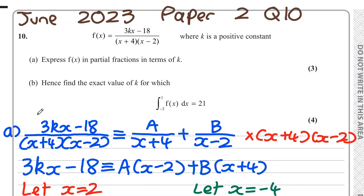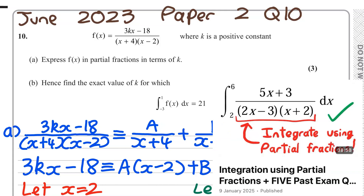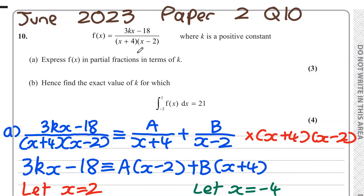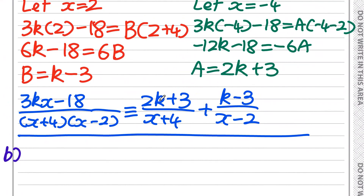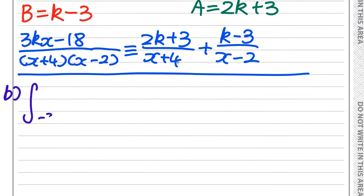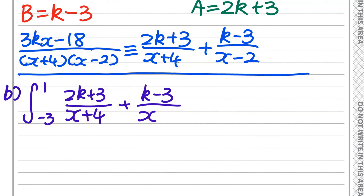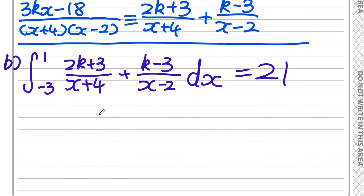For Part b, worth four marks, we need to find the exact value of k for which the integral between −3 and 1 of f(x) equals 21. This is an integrating-using-partial-fractions question. We can't directly integrate the original function, but using the partial fractions from Part a we can rewrite the integral as the integral between −3 and 1 of [(2k + 3)/(x + 4) + (k − 3)/(x − 2)] dx = 21, which we can integrate and solve for k.